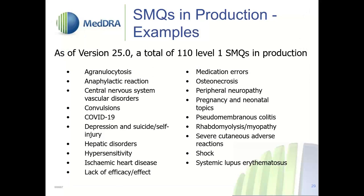As of version 25, we have 110 level one SMQs in production. Examples of SMQ topics include anaphylactic reaction, hypersensitivity, medication errors, COVID-19, shock, and lack of efficacy and effect — all of which are very relevant in terms of drug safety and pharmacovigilance activities.